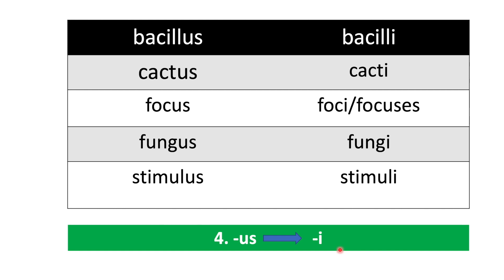Fourth category: words ending with us for singular and then with i for plural. Such as bacillus/bacilli, cactus/cacti, focus/foci or focuses, fungus/fungi, stimulus/stimuli.